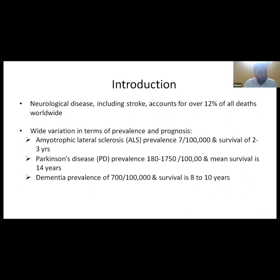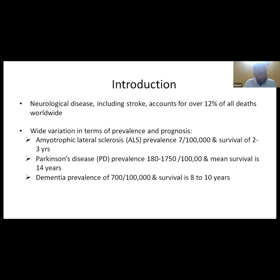Neurological diseases including stroke account for nearly 12% of all deaths worldwide. In amyotrophic lateral sclerosis, prevalence is around 7 per lakh and survival is only 2 to 3 years. In Parkinsonism, prevalence is 180 to nearly 2000 per lakh and mean survival is 14 years. In dementia, the prevalence increases with age and survival is generally 8 to 10 years.